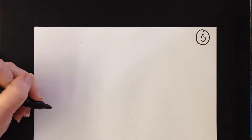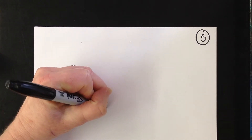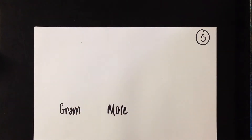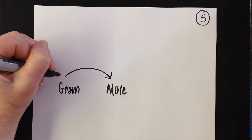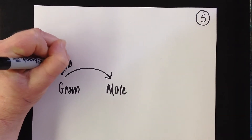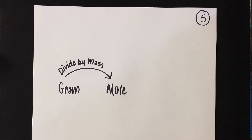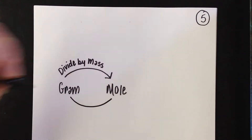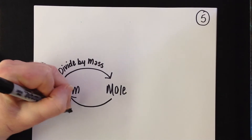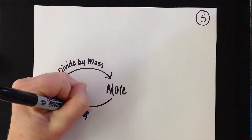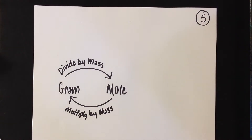We have already learned how to go from gram to mole and back. I can go back and forth between gram and mole all day long. Going from gram to mole means dividing by the molar mass, and going from mole to gram means multiplying by the molar mass — both from the periodic table.